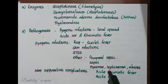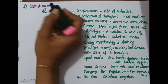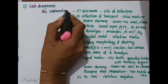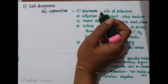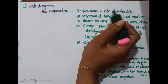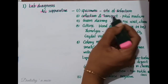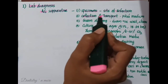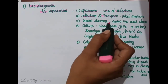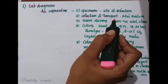Non-suppurative complications include acute rheumatic fever and acute glomerulonephritis. For lab diagnosis of acute suppurative Streptococcal infections, specimens should be collected according to the site of infection, such as swabs, pus, or blood. Specimens are collected in sterile containers under aseptic conditions and transported using Pike's transport media, which is blood agar containing 1 in 500,000 crystal violet and 1 in 16,000 sodium azide.